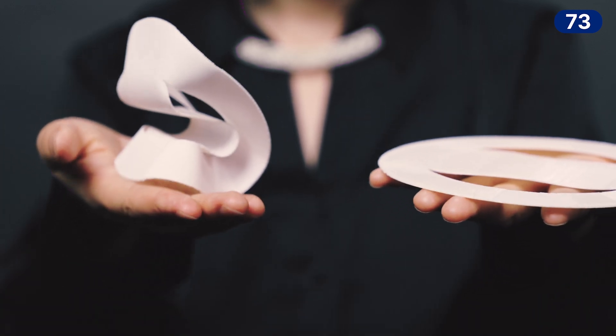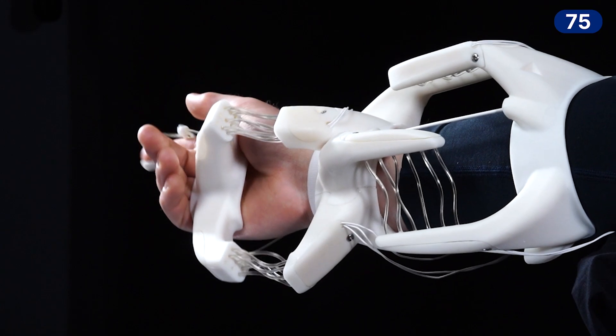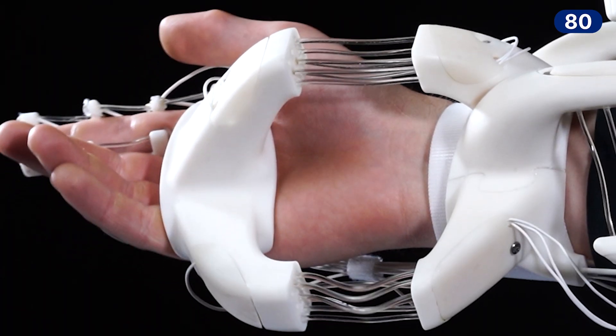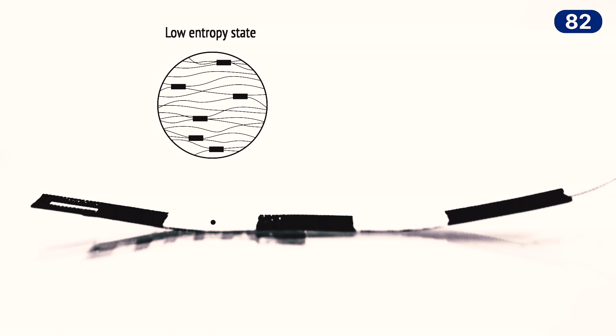In the lab we also try to make reconfigurable exoskeletons out of morphing matter, and they can be used to make dynamically reconfigurable robotics with different local motion behaviors.